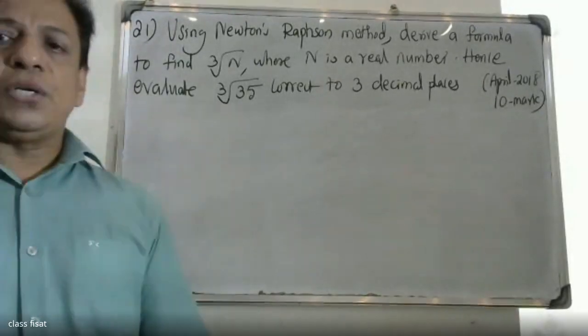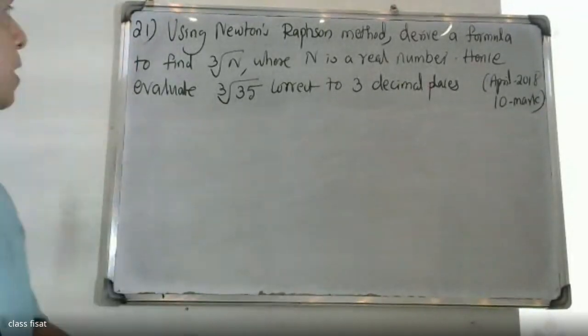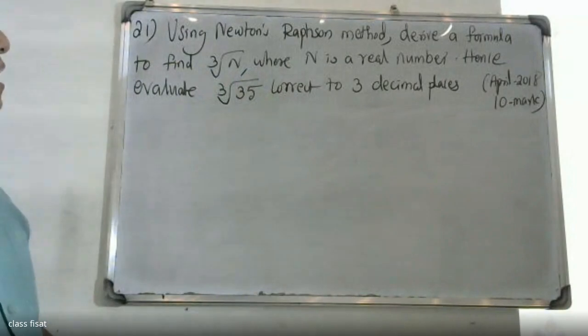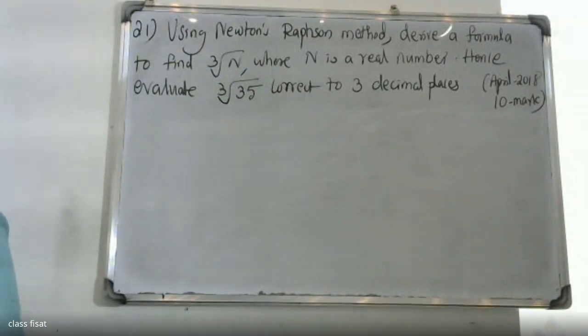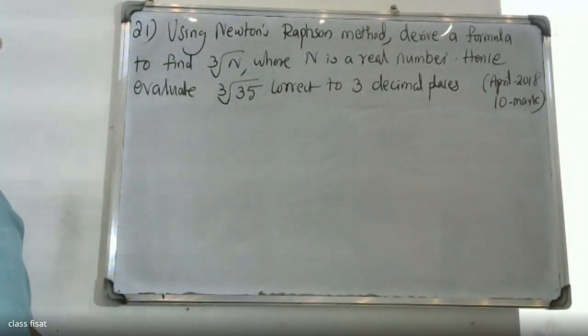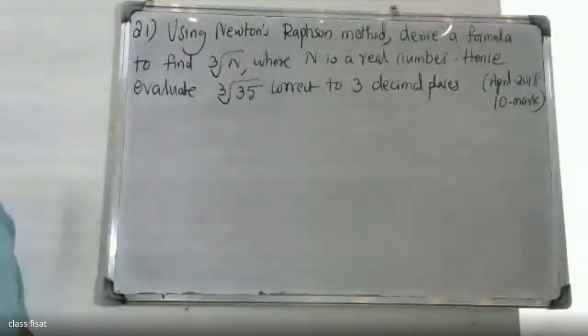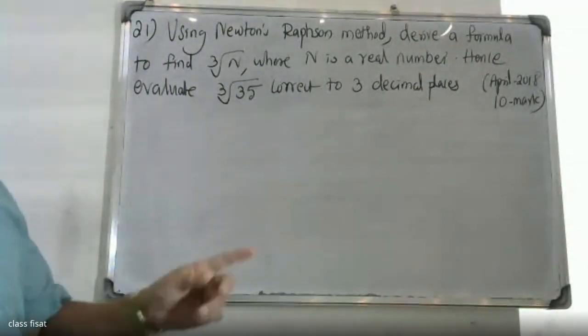Good morning students. Using the Newton-Raphson method, derive a formula to find the cube root of n, where n is a real number. Hence evaluate the cube root of 35 up to 3 decimal places.